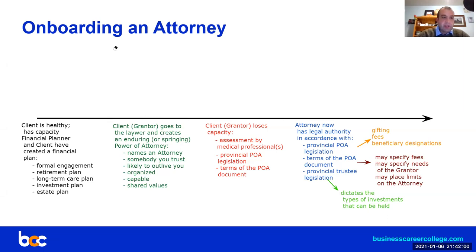You can see we're working on a timeline here, working from left to right. Let's assume that we have a client who is healthy and has capacity, and the financial planner and the client have worked together and we have a financial plan — a formal financial planning engagement. We have a retirement plan, a long-term care plan, we've talked about investments, and we have an estate plan. Those are some of the traditional key elements of a financial plan.